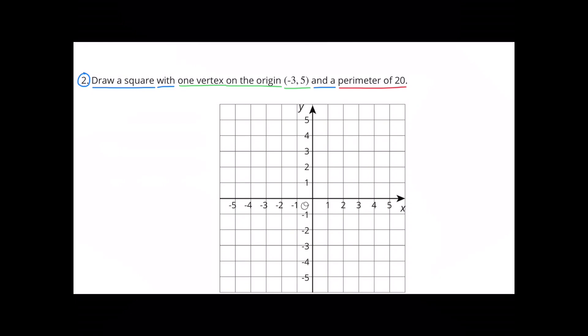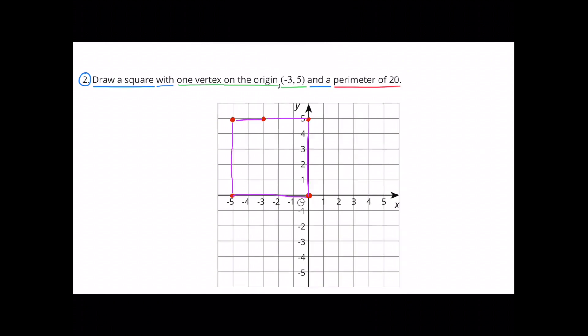Number 2. Draw a square with one vertex on the origin and plot negative 3 and 5, and the square should have a perimeter of 20. It needs to be a square.